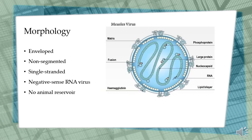The measles virus is spherical and has two major structural components. One is the helical ribonucleoprotein (RNP), formed by the association of the nucleoprotein, phosphoprotein, and large protein with the viral genome. The other is the cellular membrane-derived lipid envelope around the RNP.